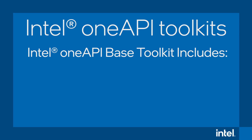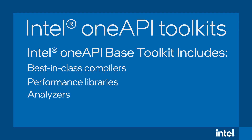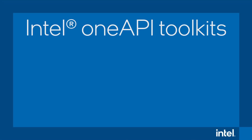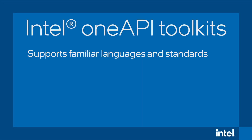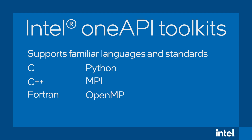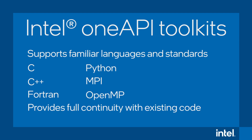Our foundational OneAPI-based toolkit includes best-in-class compilers, performance libraries, analyzers, and a debugger. Built on long-standing and proven Intel developer tools, Intel OneAPI toolkits support familiar languages and standards across C, C++, Fortran, Python, MPI, and OpenMP while providing full continuity with existing code.